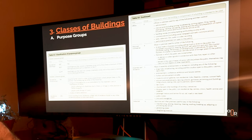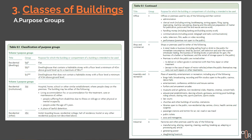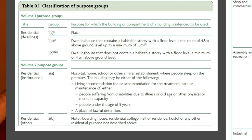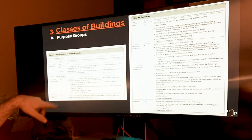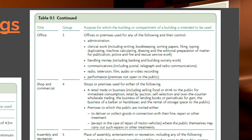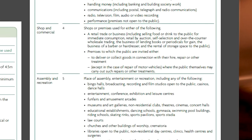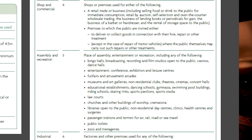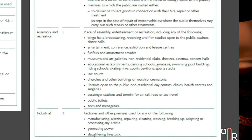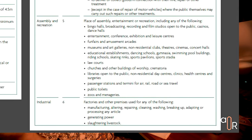Now onto the classes of buildings. This relates to when you do fire separation, which we'll talk about later. There are different types — they're called purpose groups. There's residential, which is purpose group one. Two is also residential — 2A and 2B are different types of residential. Offices are purpose group three. Shop and commercial is four. Assembly and recreation — like museums and stuff — is five. Industrial factories are purpose group six. I'll explain later when you do the fire separation why these are important.